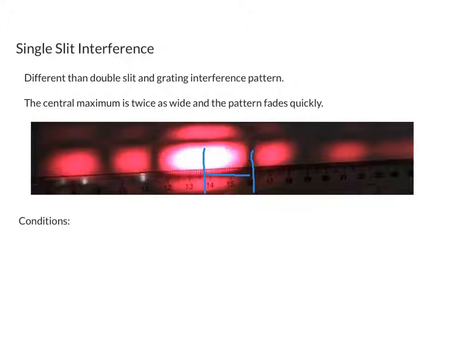Outside of that central maximum, the distance from bright to bright would go with n equals 1. The distance from dark to dark would also go with n equals 1.